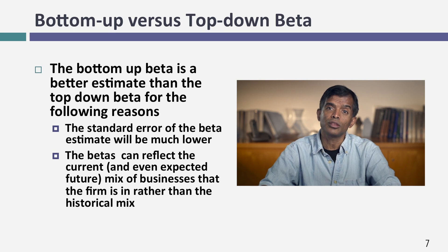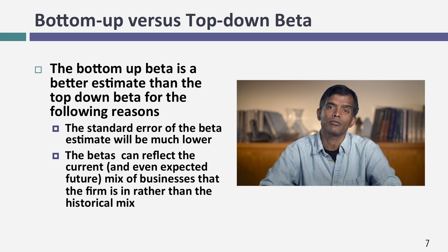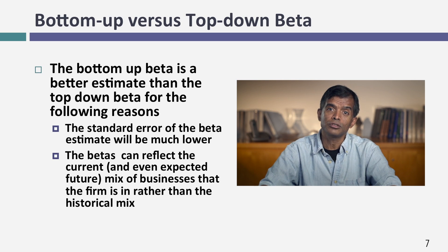The second reason is I get to set the weights. If you entered the chemical business yesterday, there is zero chance a regression beta for your company will reflect it — but I set the weights. In fact, I can be proactive: if you tell me you're going to be in the technology business tomorrow, I can bring in the weight and beta for that technology business. With bottom-up betas, I regained control of the process. I'm no longer at the mercy of a single slice of history and a single regression.